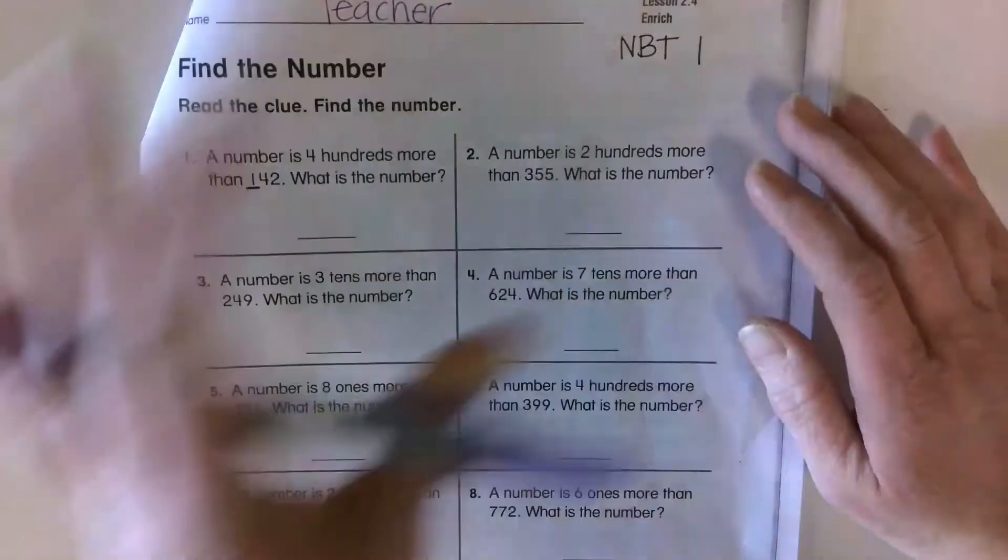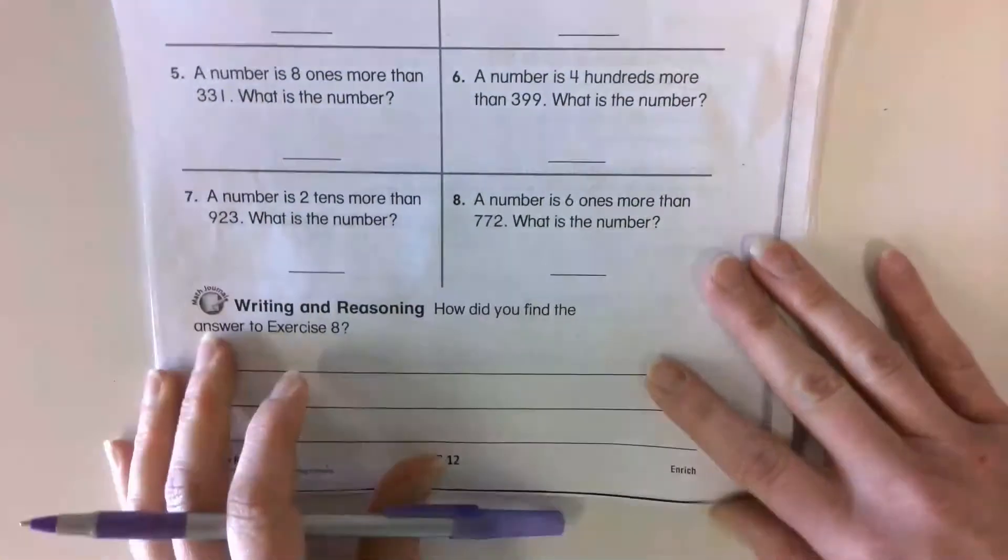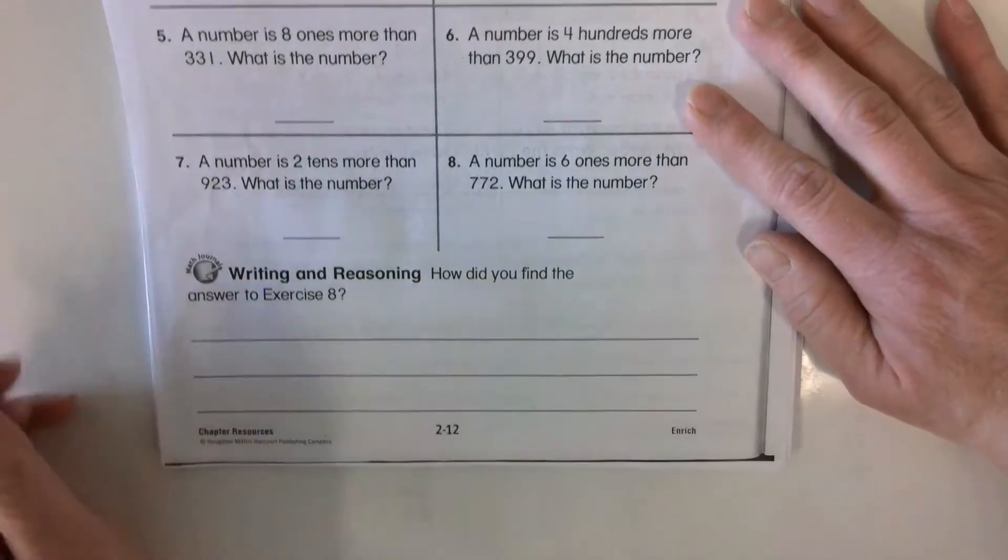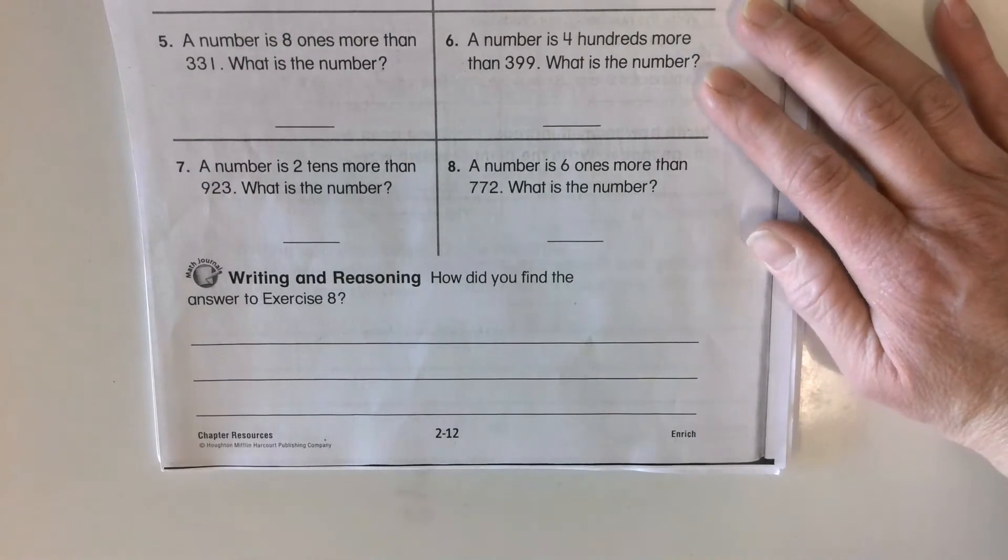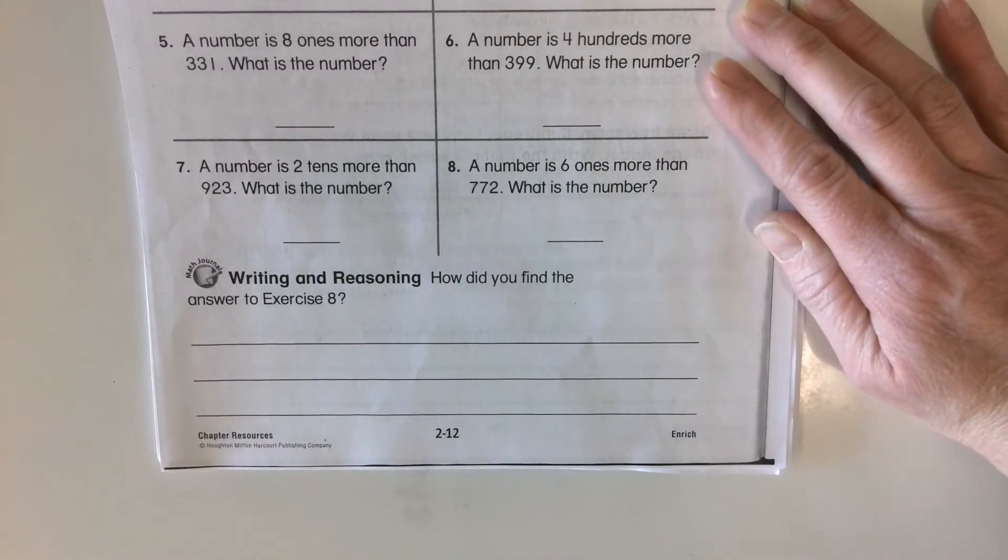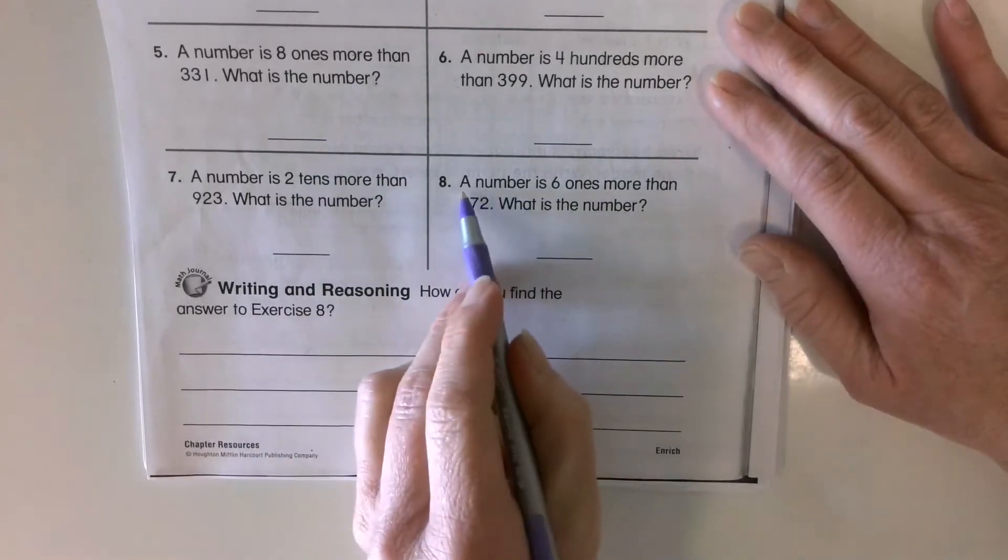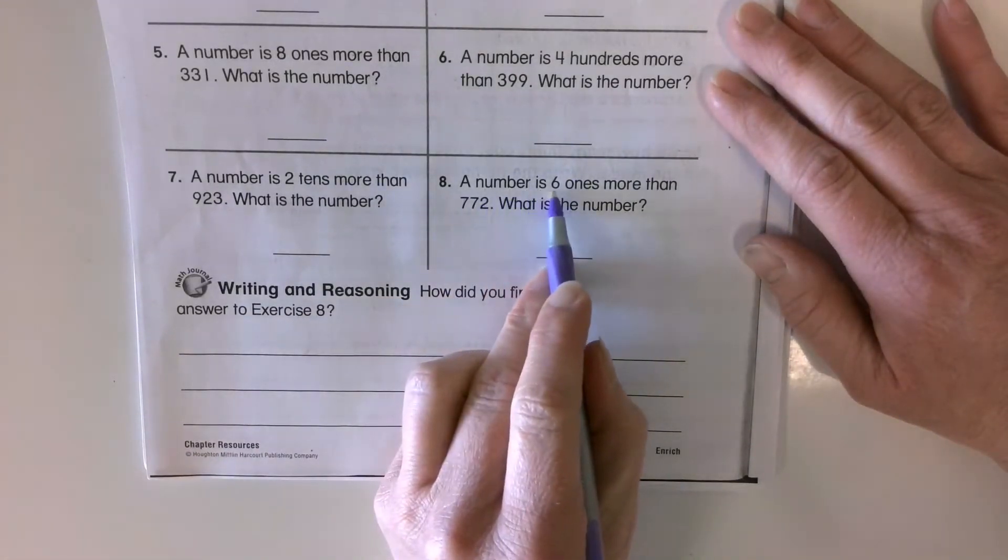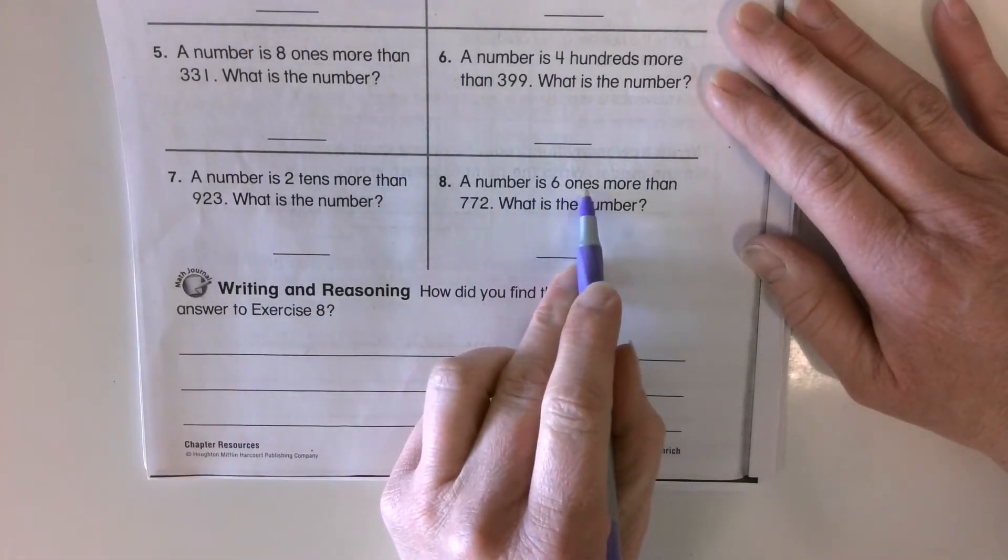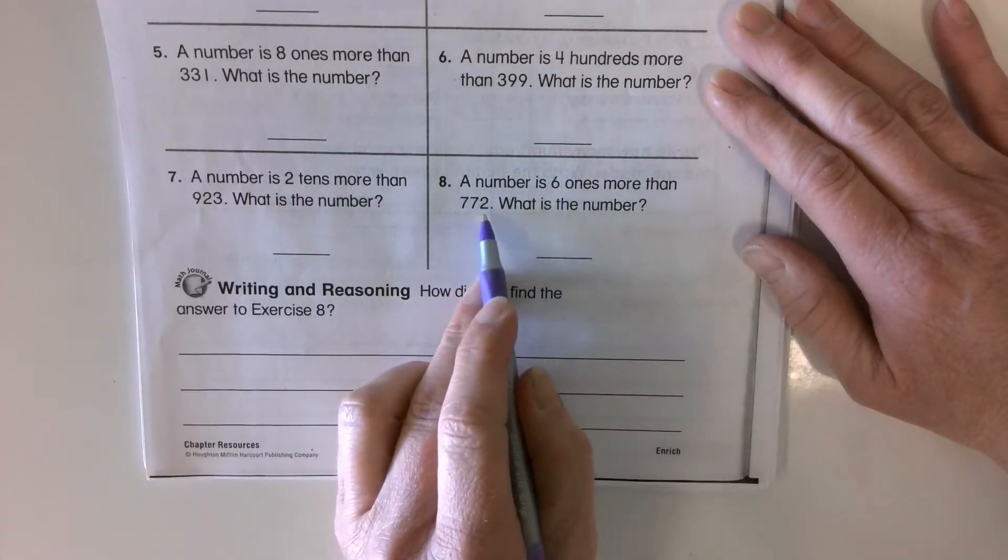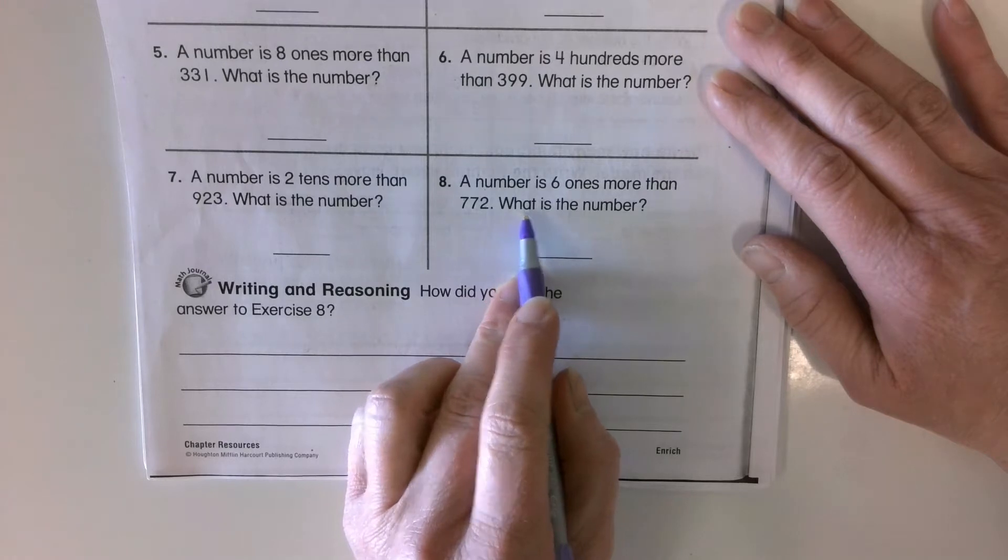You're going to do the rest of them like this. Down here it says, Writing and Reasoning. How did you find the answer to exercise eight? Okay, so eight says a number is six ones more than 772. What is the number?